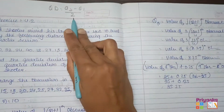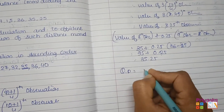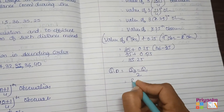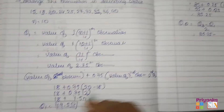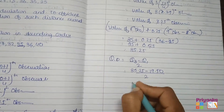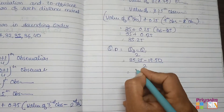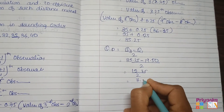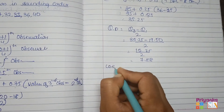Now we apply the quartile deviation formula: Q3 minus Q1 divided by 2 = 35.25 − 19.50 divided by 2. First subtract to get 15.75, then divide by 2. The final answer for quartile deviation is 7.88.